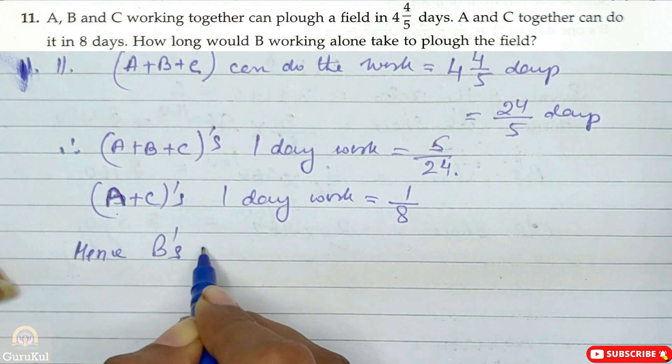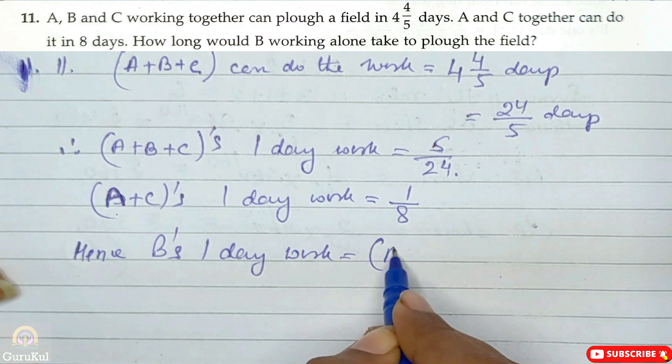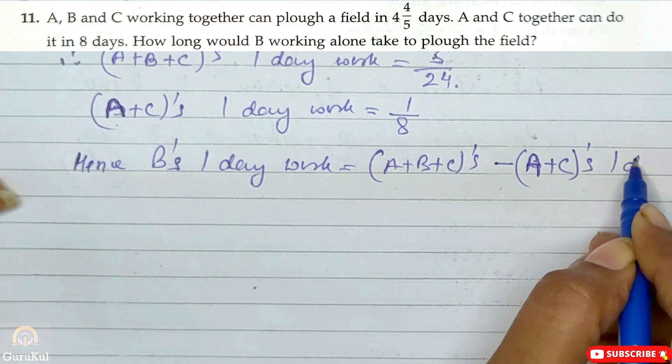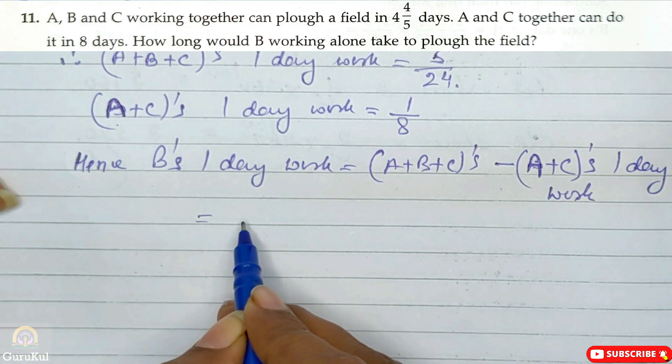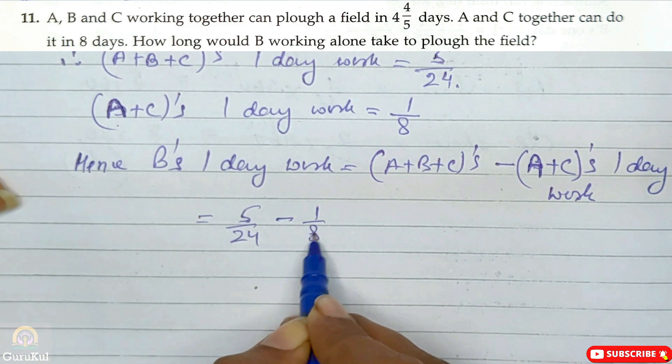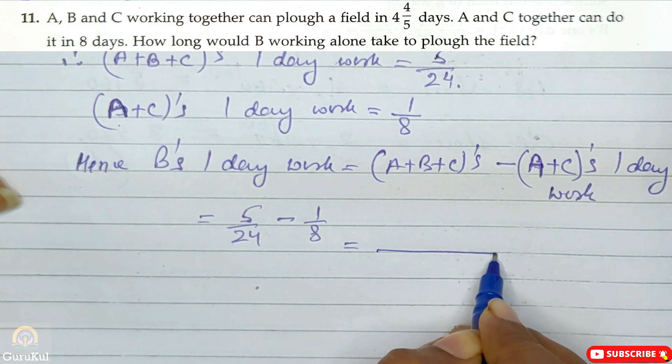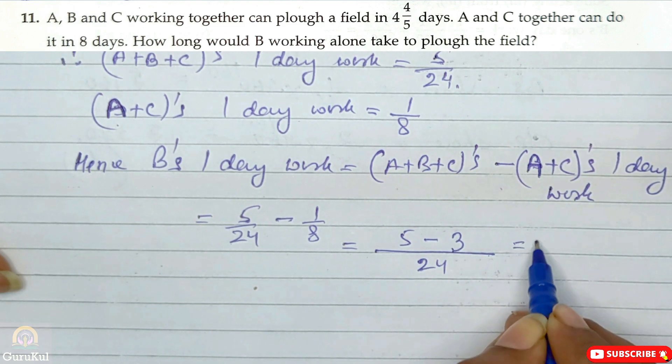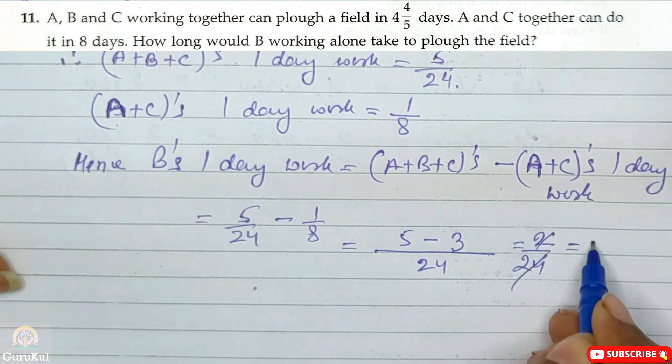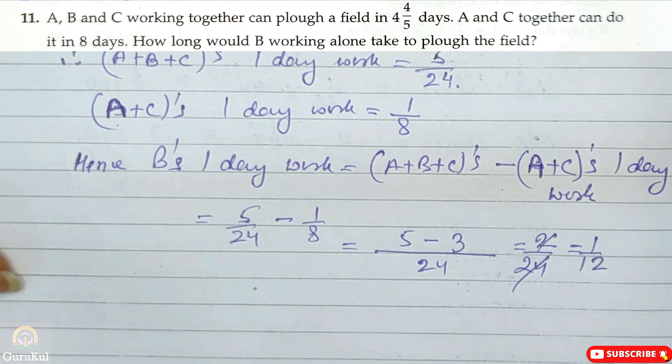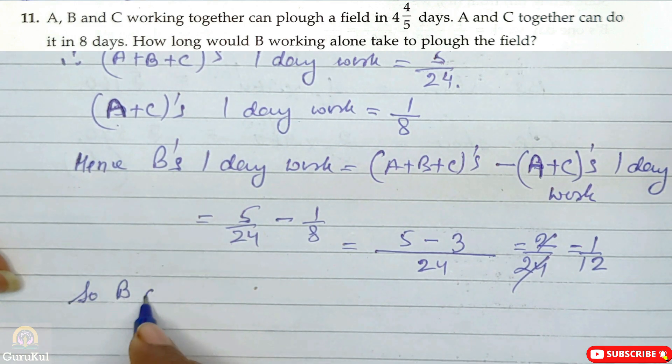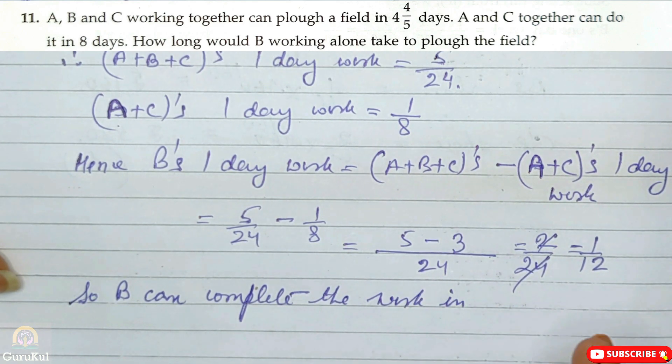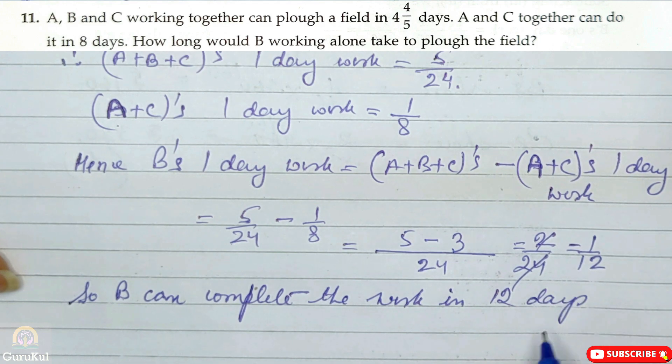It's very simple. We have to subtract A plus C's one day work from A plus B plus C's one day work. Hence, B's one day work will be 5 by 24 minus 1 by 8. LCM is 24. So it will be 5 minus 3, which is 2 by 24, which reduces to 1 by 12. So B can complete the work in 12 days. And this is the answer.